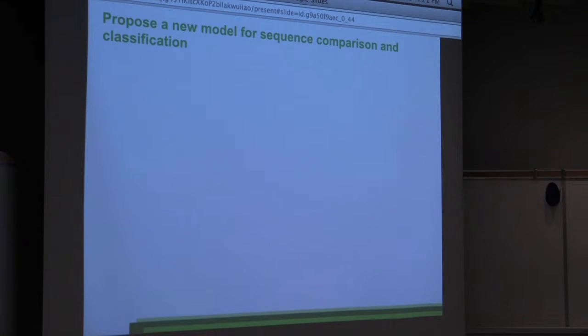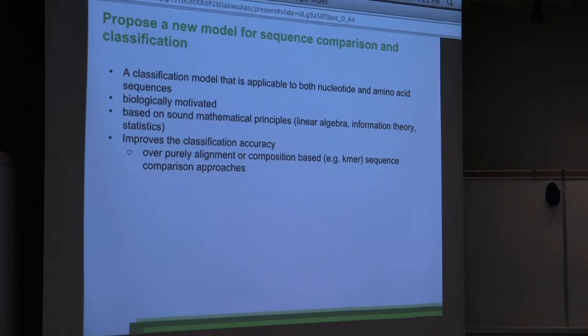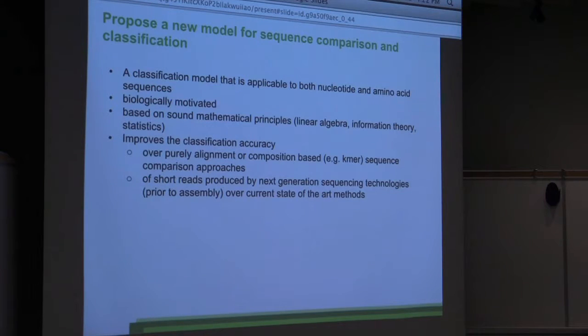So we proposed, we decided to propose a new model for sequence comparison and classification that would be applicable to both nucleotide and amino acid sequences, which would be biologically motivated based on some mathematical principles. It should improve the classification accuracy over purely alignment or composition-based sequence comparison approaches and should improve the accuracy with which we could classify short reads coming directly and long reads coming directly from the sequencers without doing the assembly.